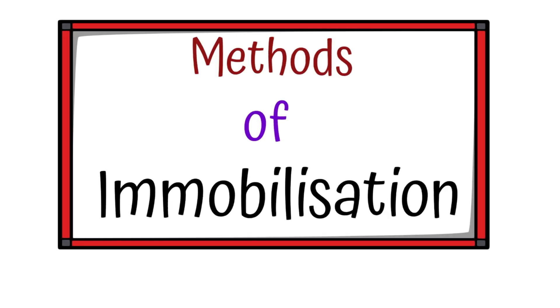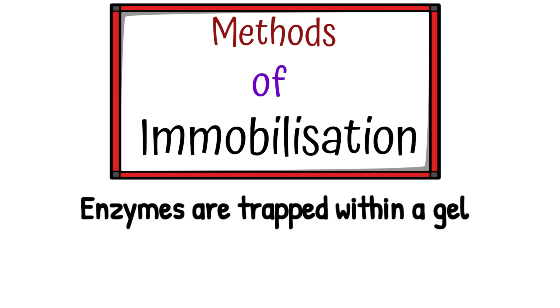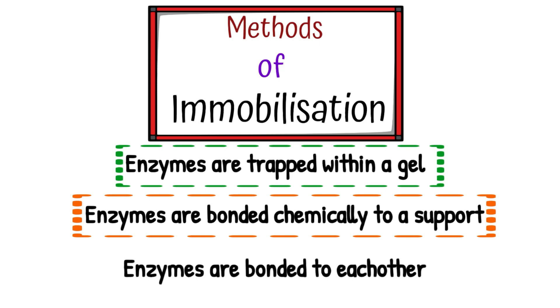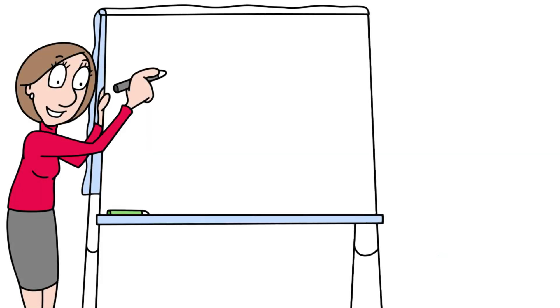How would you immobilise enzymes? One method is to trap the enzymes in a gel - you did this in the lab. Or you can bond them chemically to a support such as glass, or bond them to each other. There are lots of different methods, but immobilising enzymes in gel is really important.